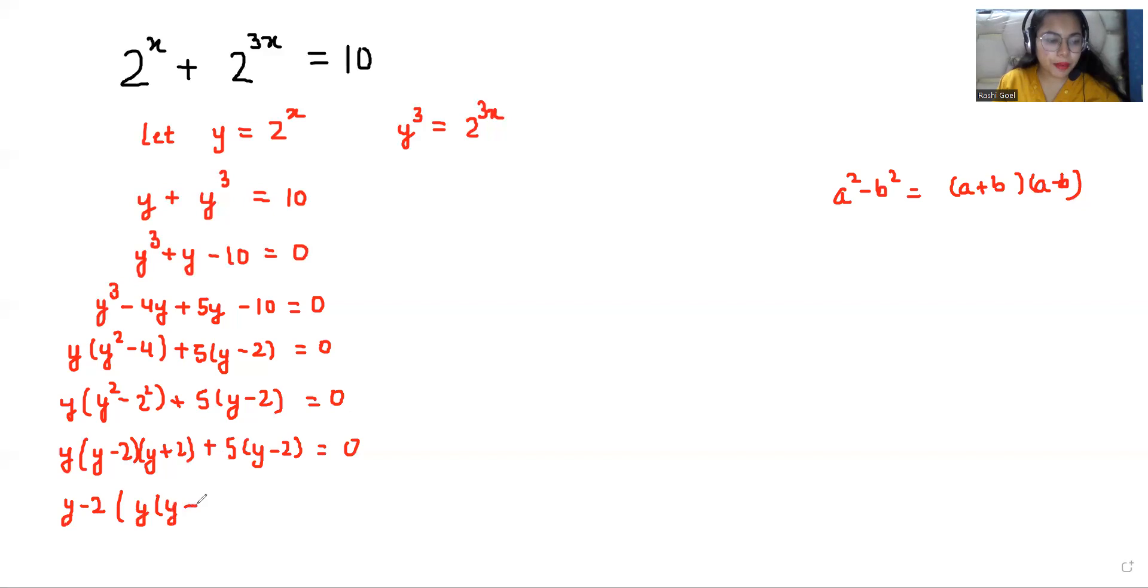From this equation, I can take y - 2 as common. So what is left? (y - 2)(y + 2 + 5) = 0. Or I can write (y - 2)(y^2 + 2y + 5) = 0.